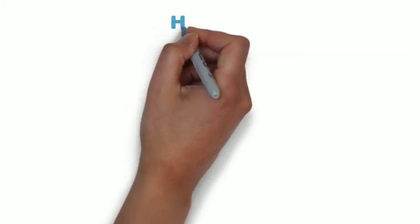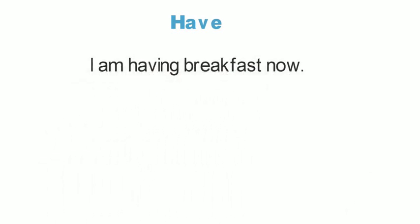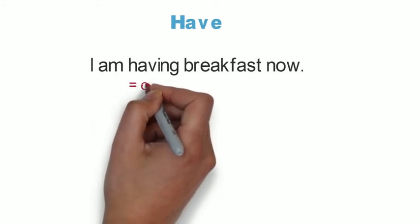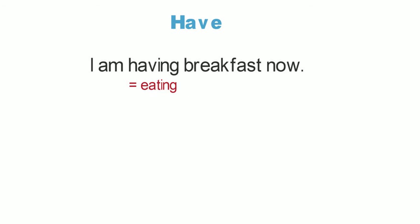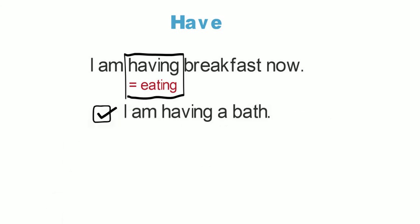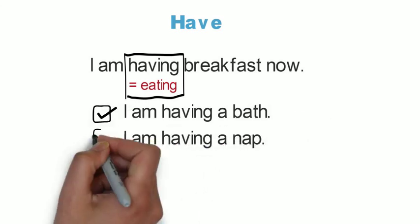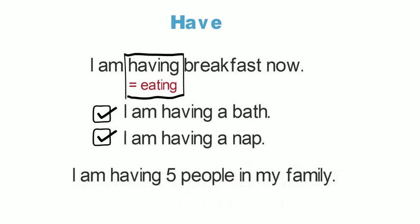The verb have is a tricky verb. We can say I am having breakfast now, because having breakfast means the same as eating breakfast — it is an action, so we can use the present continuous. We can also say I am having a bath and I'm having a nap. However, we cannot say I am having five people in my family, because in this case have shows possession — it's not an action, it's a true fact, so we use the present simple tense.